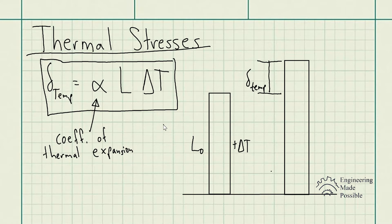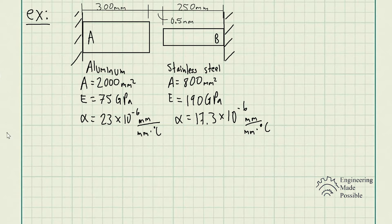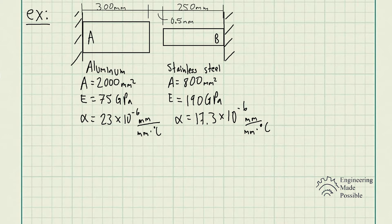Let's go ahead and do an example. For this problem statement: at room temperature, or 20 degrees Celsius, a 0.5 millimeter gap exists between the ends of the rods, as shown in the image. At a later time, when the temperature has reached 140 degrees Celsius, determine A, the normal stress in the aluminum rod, and B, the change in length of the aluminum rod.